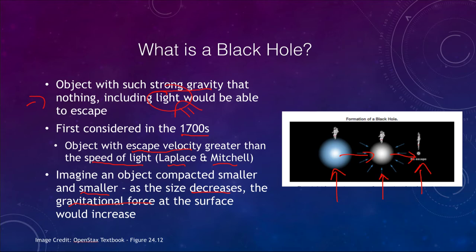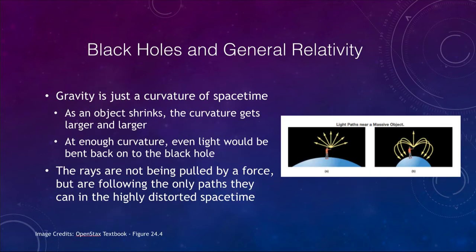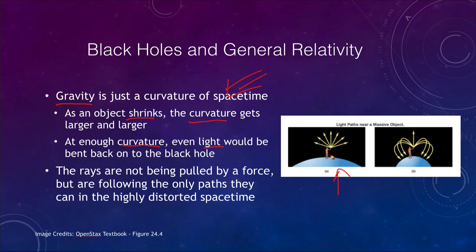In terms of black holes and looking at them with general relativity — remember general relativity describes gravity as a curving of space-time — so space and time curve. What happens is as the object shrinks, this curvature gets larger and larger. If the curvature is large enough, then even light would be bent back in on the black hole. We can see that in our image here: at an ordinary object, if we shine a flashlight out, all of the rays are able to escape, traveling at greater than the escape velocity. But as we compact the object down and it gets denser, only the light rays going straight away can still escape; those trying to follow other paths end up getting curved back in.